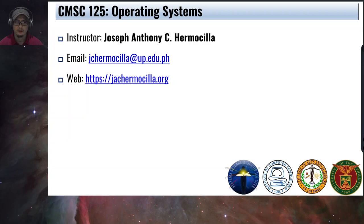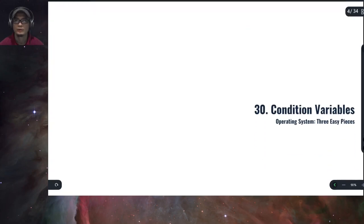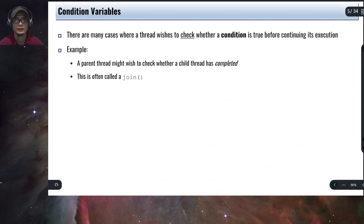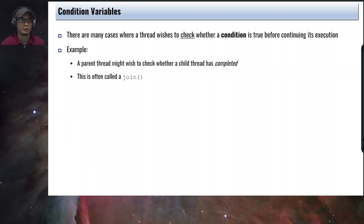Hello students, welcome to another video lecture for COMMSCI-125 Operating Systems. In this video we're going to learn about condition variables. In the previous lectures we talked about the lock mechanism, or lock primitive, which is used to achieve mutual exclusion — ensuring that a thread can run on a critical section without other threads running in their critical section, so race conditions will not happen. We also discussed different approaches to using locks in implementing data structures.